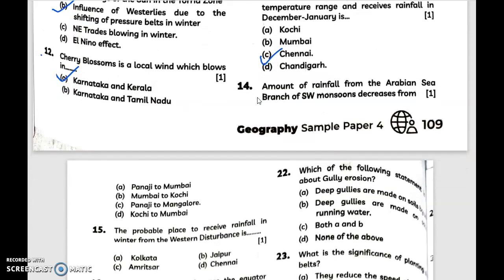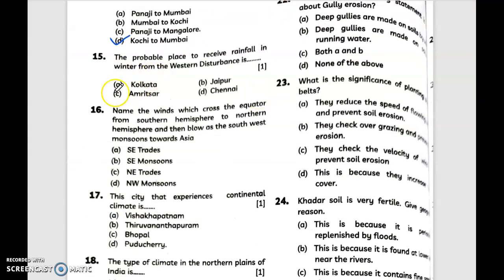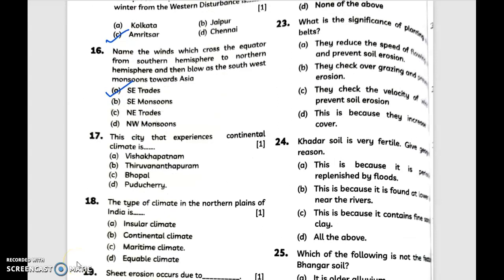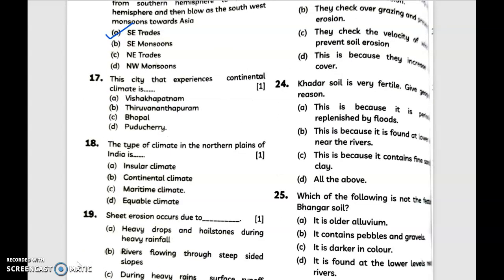Amount of rainfall from the Arabian Sea branch of southwest monsoons decreases from Kochi to Mumbai. The probable place to receive rainfall in winter from the western disturbance is C, Amritsar. Name the winds which cross the equator from southern hemisphere to northern hemisphere and then blow as the southwest monsoons towards Asia - answer is option A. Now this city that experiences continental climate is answer C, that is Bhopal.